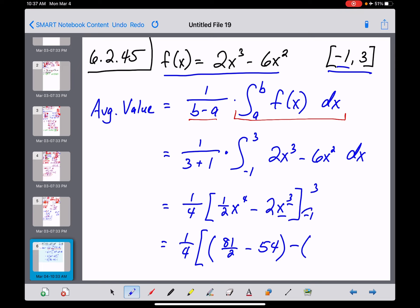Minus, now let's put in that negative 1 right there. Negative 1 to the fourth is 1 times 1 half is 1 half. And then minus, okay, negative 1 cubed is negative 1. Times negative 2, this is actually gonna be a plus 2 right there.